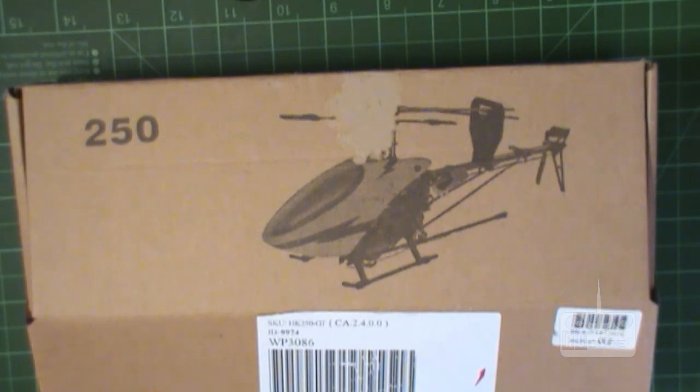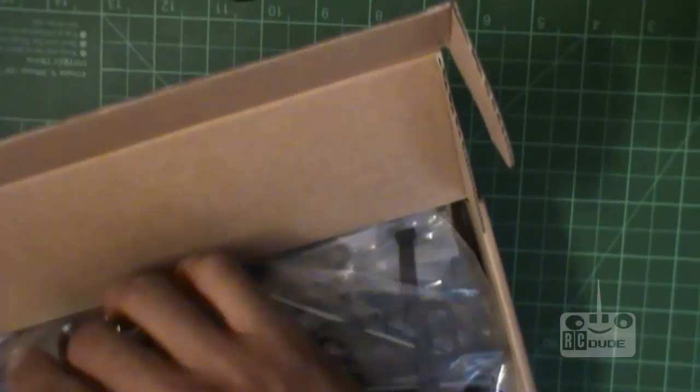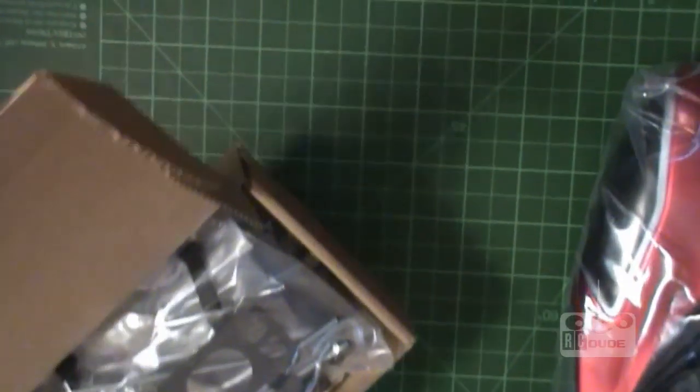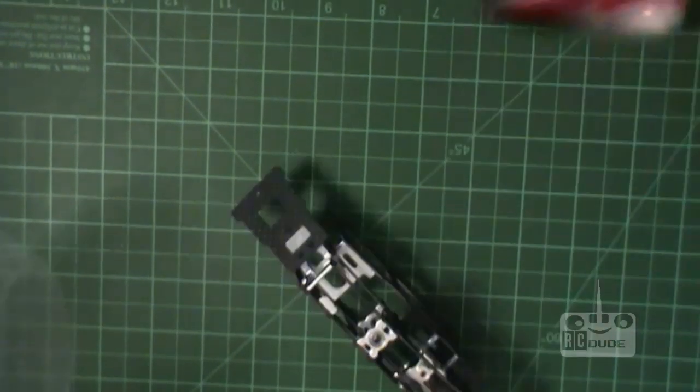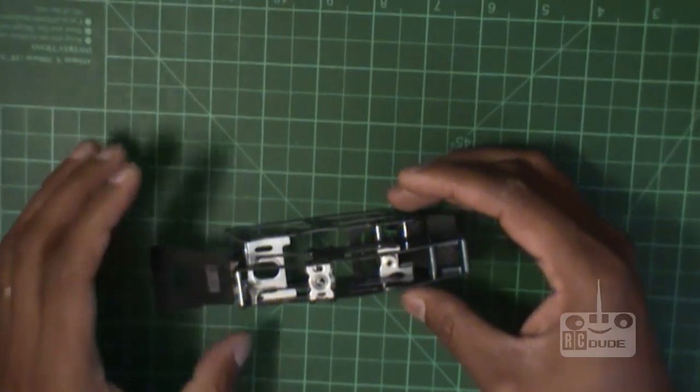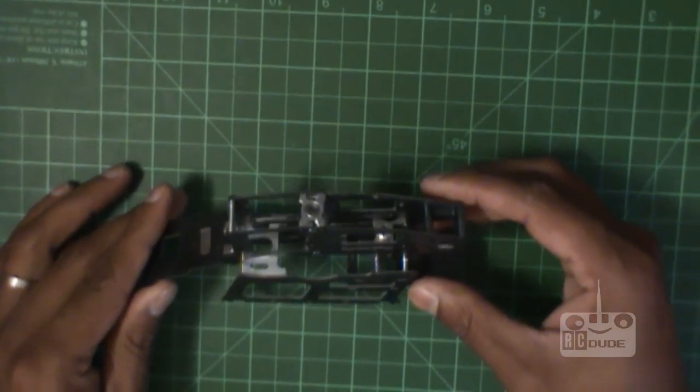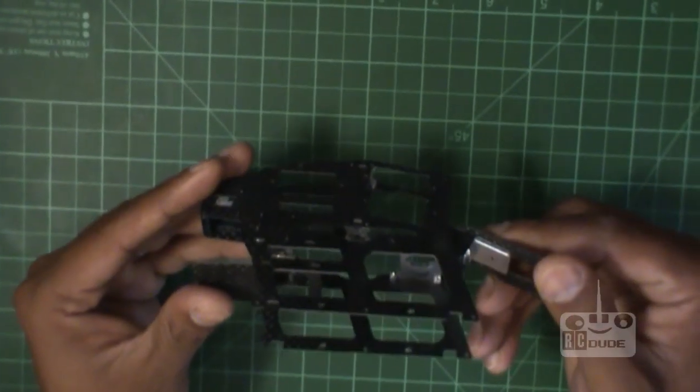Hi guys, so today I'm going to build my 250 heli. We're going to take first the servo and motor, take these things out, and this is your canopy. Put the canopy back and let's start it.